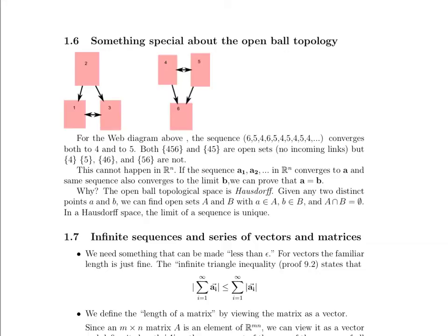So what's interesting is both 4-5-6 and 4-5 are open sets, but 4 by itself, 5 by itself, 4-6 by itself, and 5-6 by itself are not. Note that this can't happen in Rn. That's probably what you were already thinking about and what I was hinting about just a moment ago. If the sequence in Rn converges to A and the same sequence also converges to B, we can prove that A equals B. And you might be wondering why that is. Why are we able to do that in Rn, but not able to do that with the finite topology example?